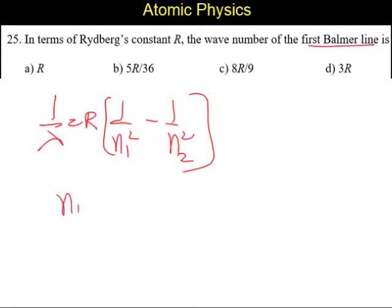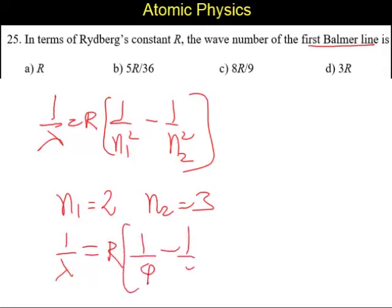For a Balmer line, N1 would be 2, and for the first Balmer line, N2 should be equal to 3. So, it is 1 by lambda equal to R into (1 by 4 minus 1 by 9).